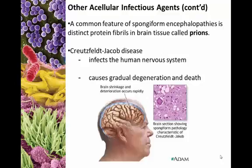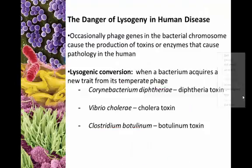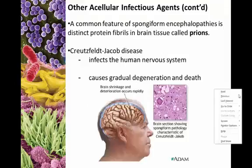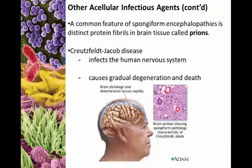The most common result of a prion infection is what we call a spongiform encephalopathy, basically where the prion begins to degrade brain tissue. Formerly very dense brain tissue actually begins to have holes in it where the prion has begun to degrade the tissue. The most common human version of this is Creutzfeldt-Jakob disease, specifically infecting the nervous system. It causes gradual degeneration of mental faculties and eventual death.